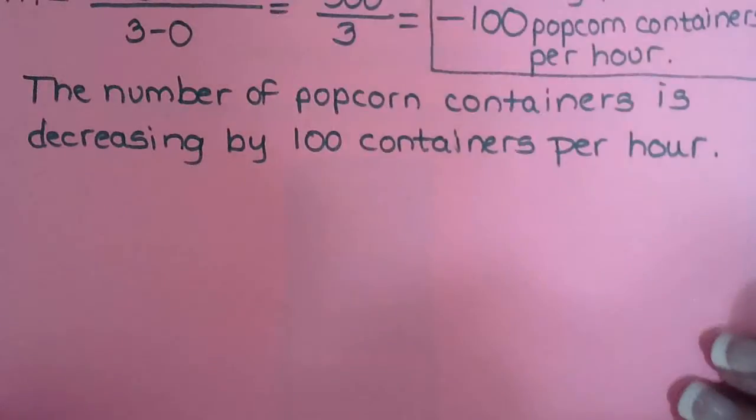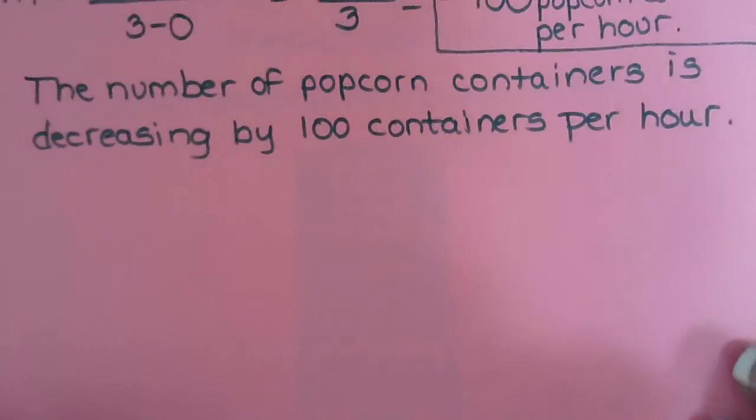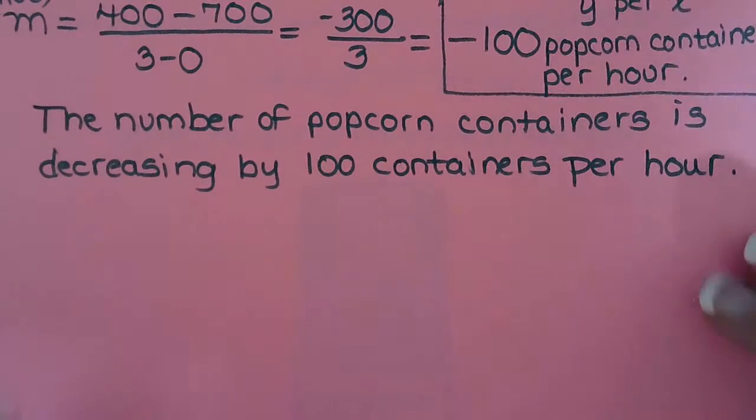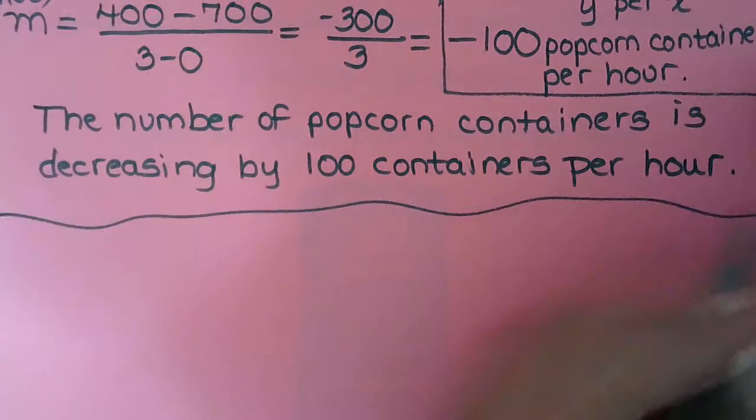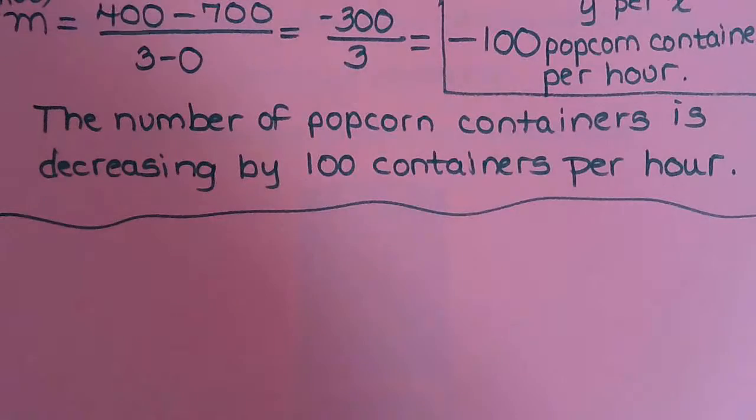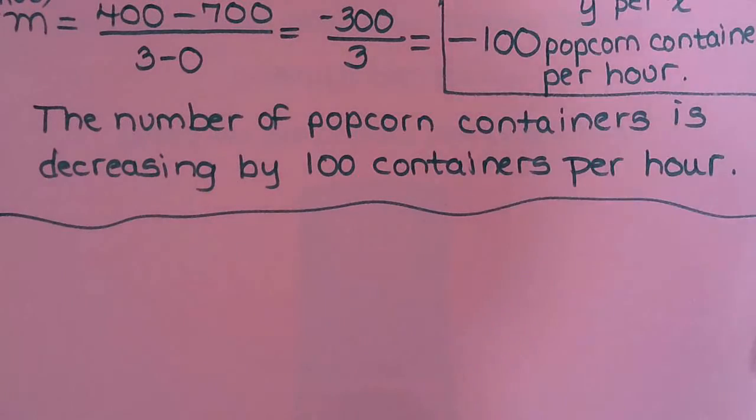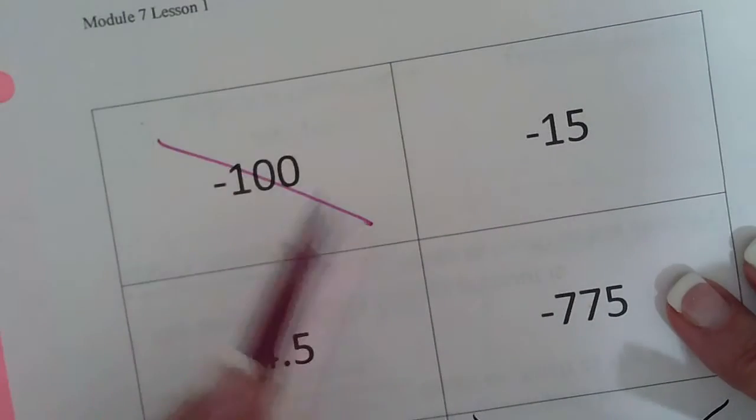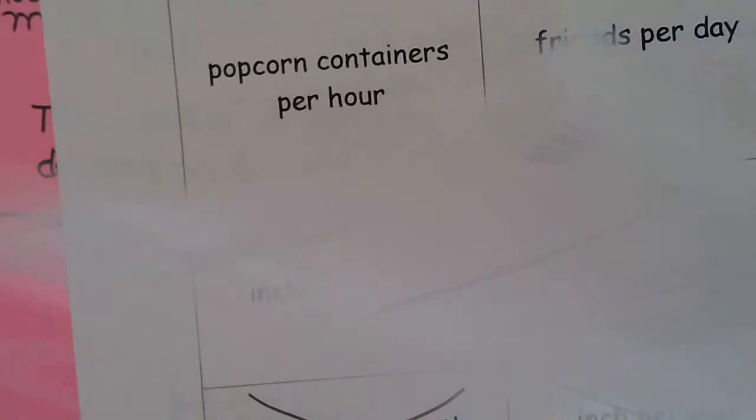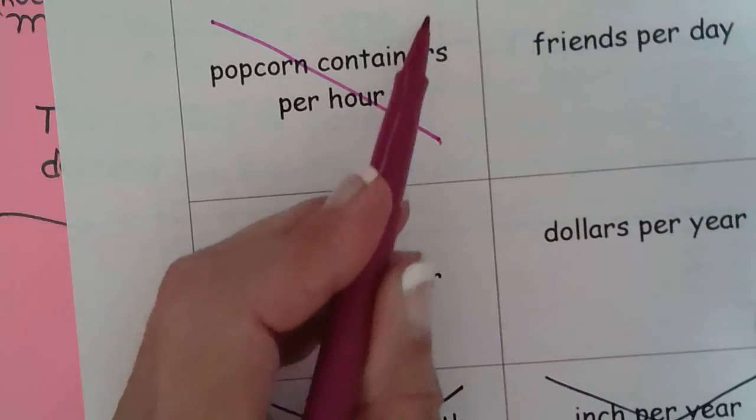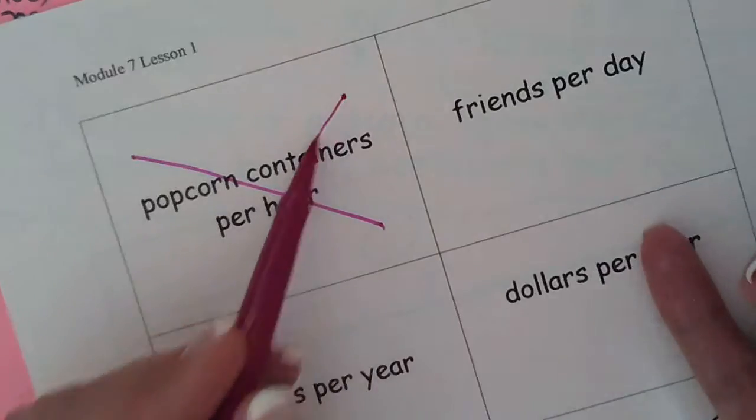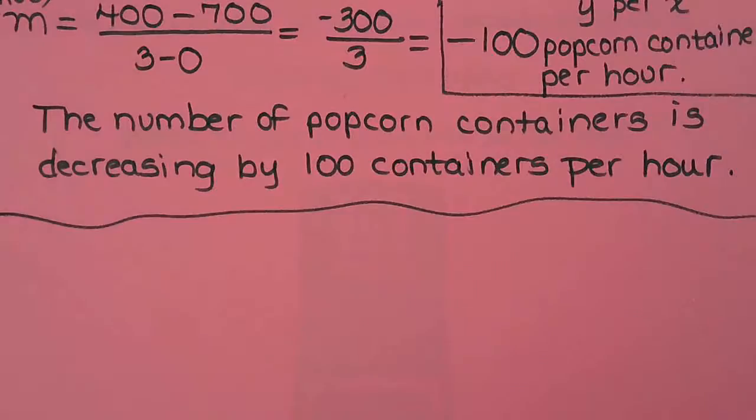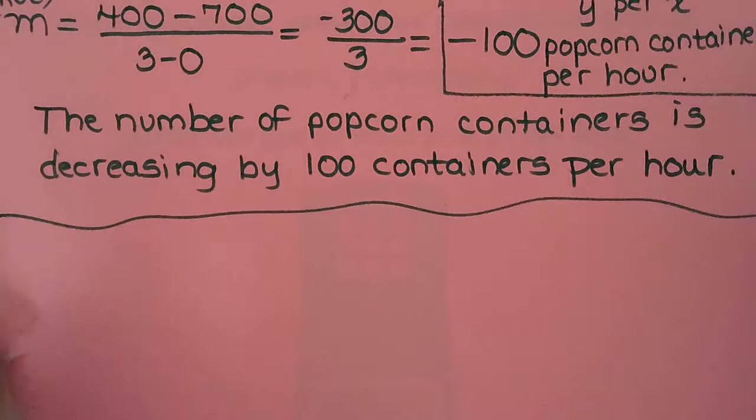Okay, let's go ahead and do number 12. Oh, we got to do negative 100 and popcorn containers. So there's our negative 100 and popcorn containers per hour. Okay, down to our final three.